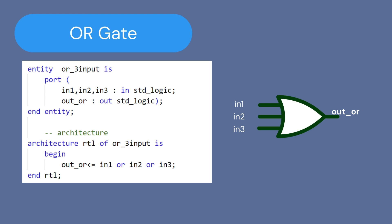For the architecture, to describe the functionality of the OR gate we simply OR the inputs together. Notice the signal assignment operator using the less-than and equal sign together — this is equivalent to the equal sign in C or Java. VHDL uses these two consecutive characters to represent the assignment operator, meaning we assign the output of the OR gate to the OR operation of the three inputs. This statement will execute instantly when there is any change in the inputs.